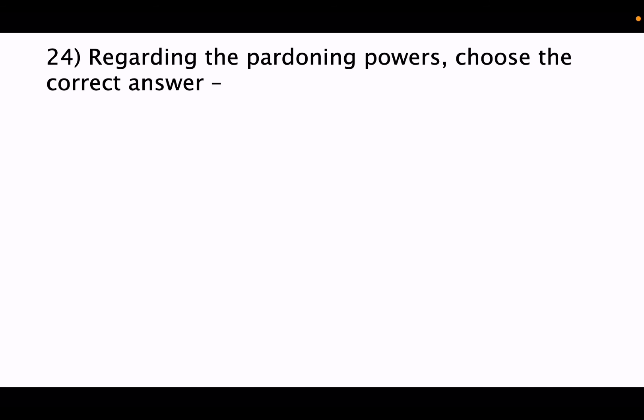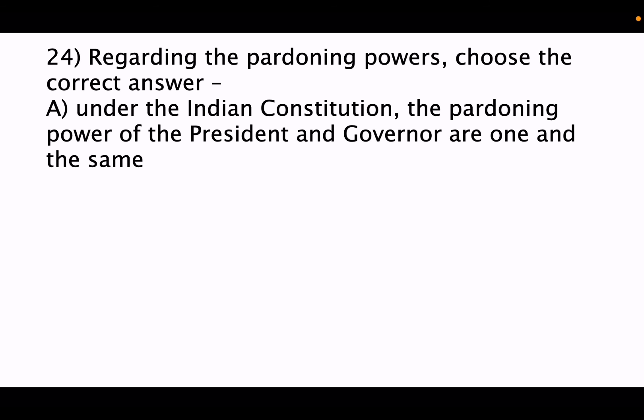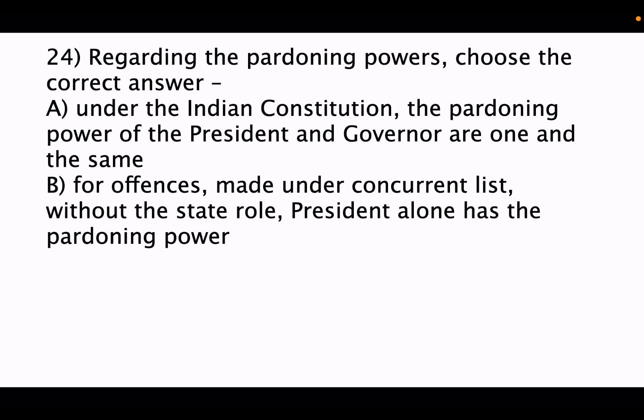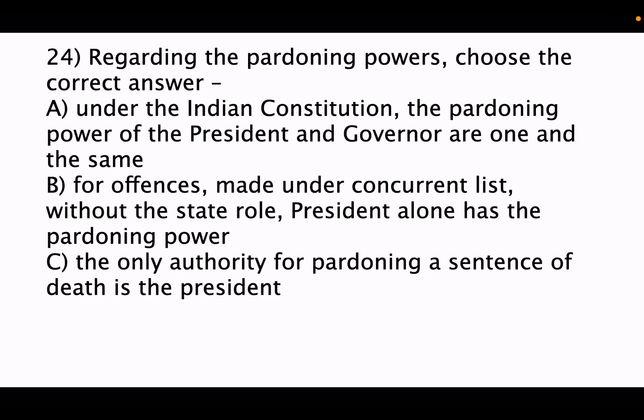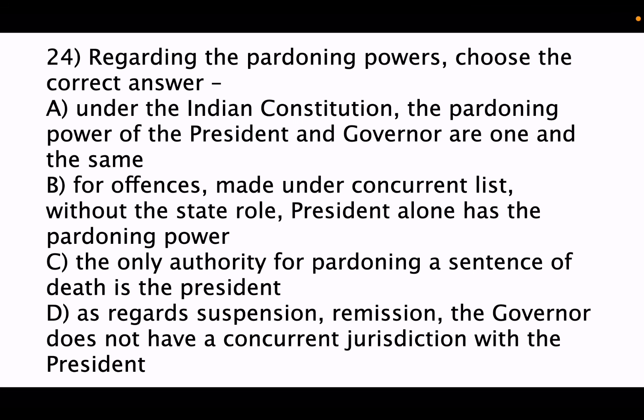Twenty-fourth question: regarding pardoning powers, choose the correct answer. Option A: the pardoning power of president and governor are one and the same. Option B: for offenses under the concurrent list without a state rule, the president alone has pardoning authority. Option C: the only authority for pardoning a sentence of death is the president. Option D: regarding suspension and remission, the governor does not have concurrent jurisdiction with the president. The correct answer is option C.